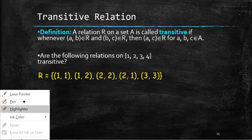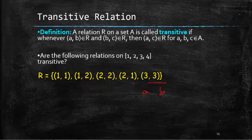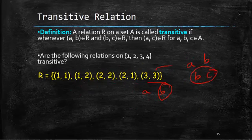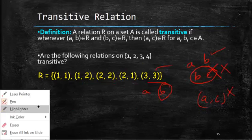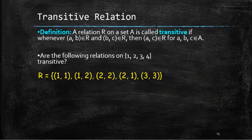Now what about (3, 3)? For (3, 3), if I take it as A, B, do we have any ordered pairs starting with B which is 3? No, we don't have any ordered pairs starting with B. So if we have A, B but we don't have B, C, then we don't need to check for A, C. This is a very important point with respect to transitive relation. So the conclusion is that this is a transitive relation.